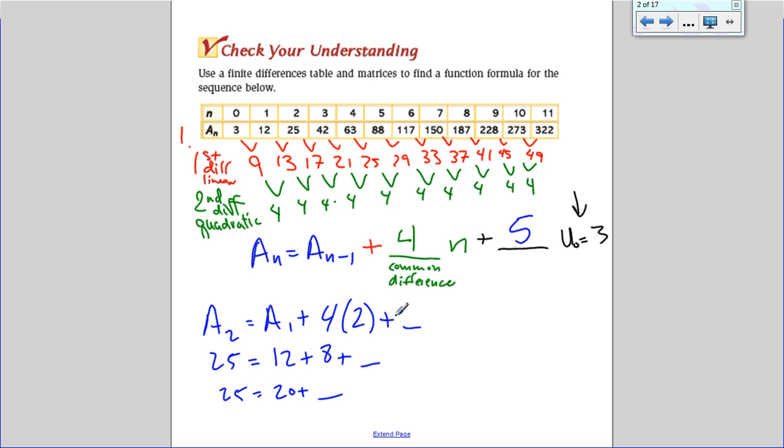So if I maybe want to check it real quick, we can define a sub 3. I need a sub 2 plus 4 times 3 plus that 5 that I think I figured it out to be. So a sub 3 is 42,